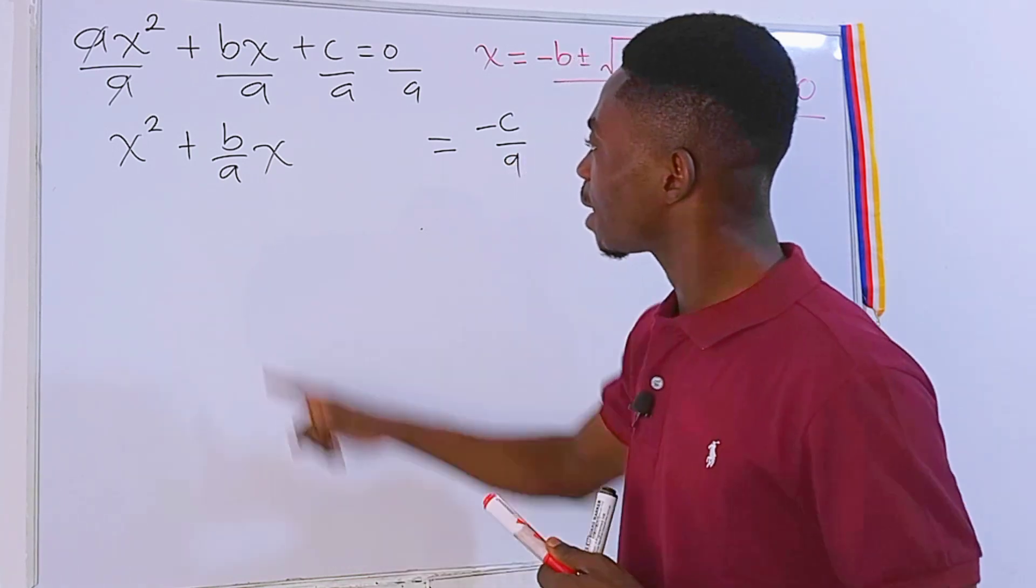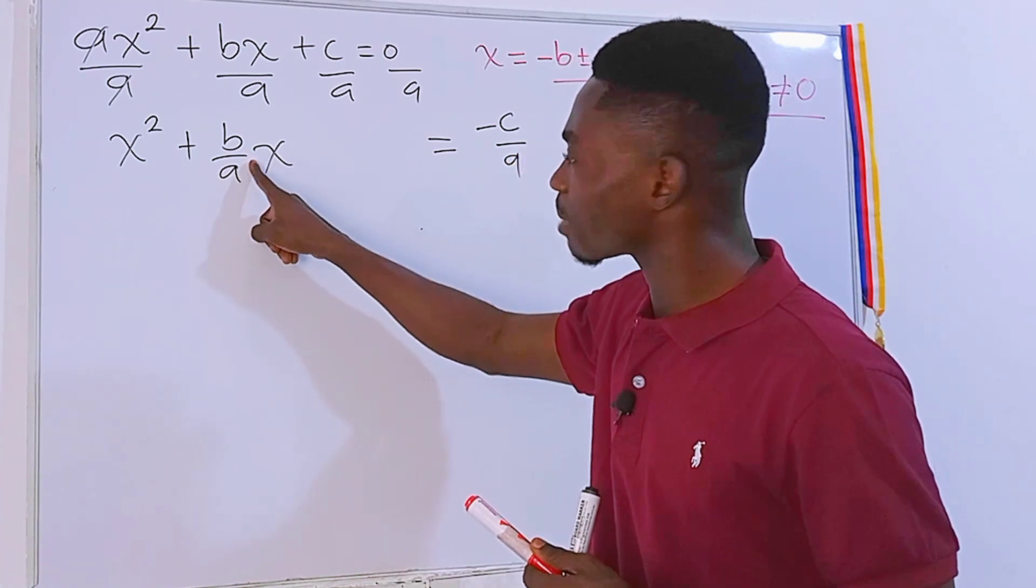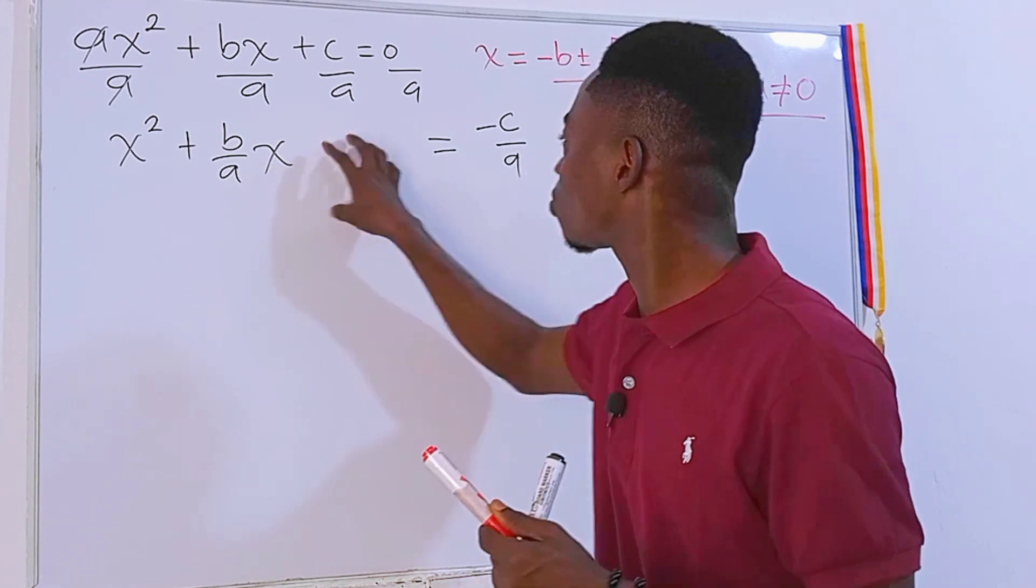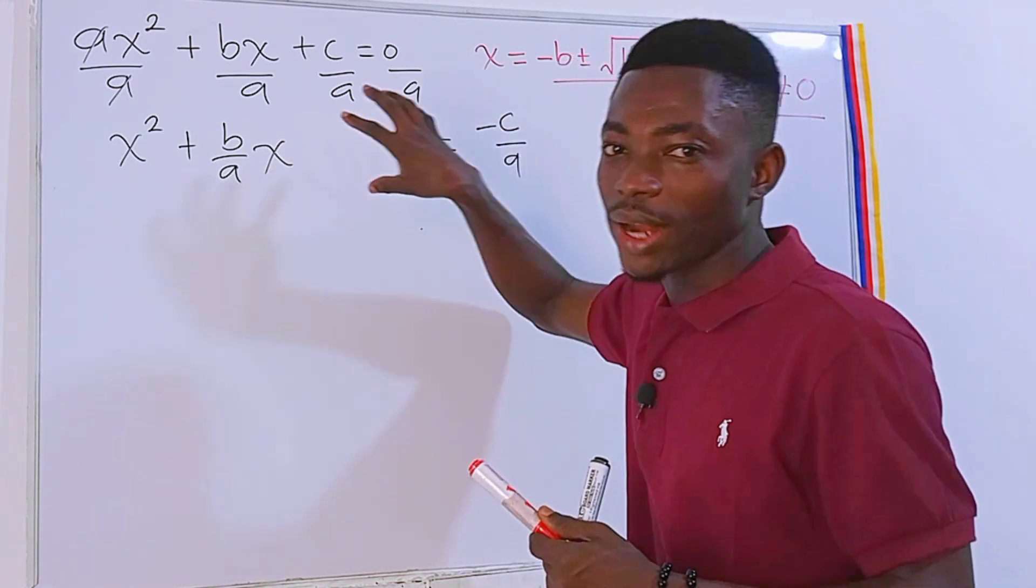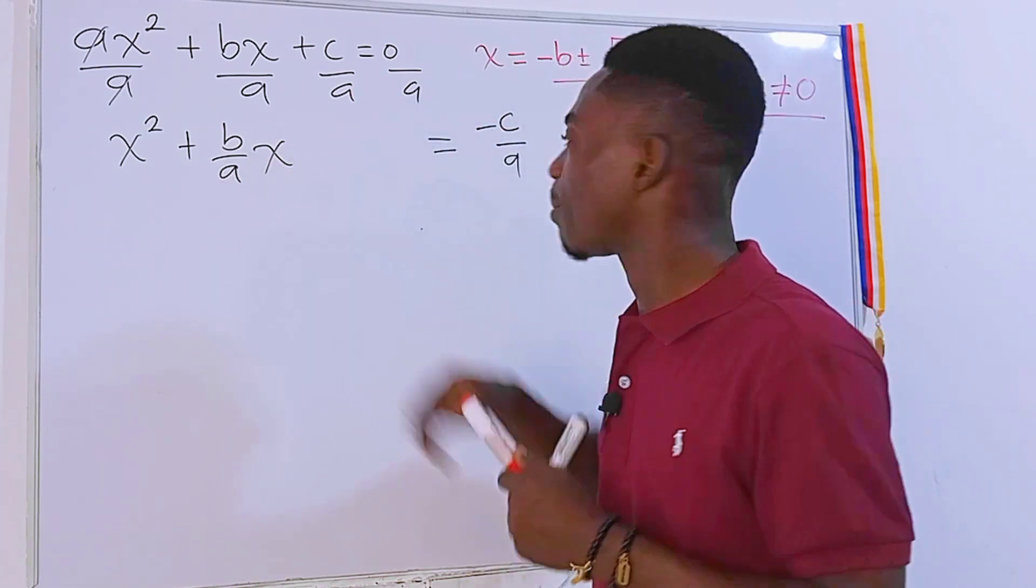The magic number is that multiply the coefficient of x by one half, square the resource, and then add to each side of the equation. So the one that we put here will be the magic number. This is what I mean.